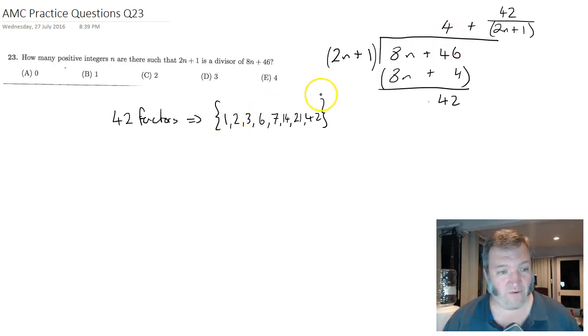So, as long as 2n plus 1 equaled any one of those numbers, I would have 2n plus 1 being a divisor. Now, n must be an integer when we solve these. If we start by having a look at 2n plus 1 equals 1, clearly I'm going to have a problem. 2n equals 0. n equals 0. The question says positive integers n. So that's not going to be any use for me. It's an integer, but it's not a positive integer. So even though that would work, it's no good.